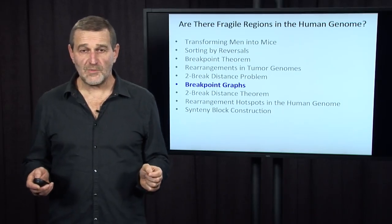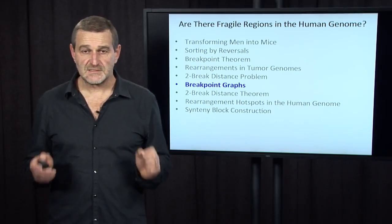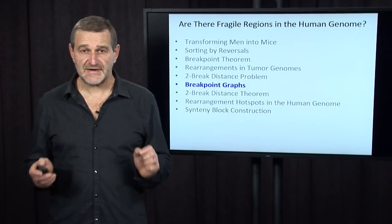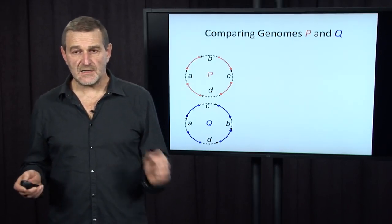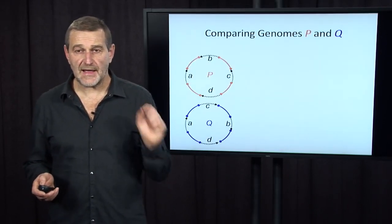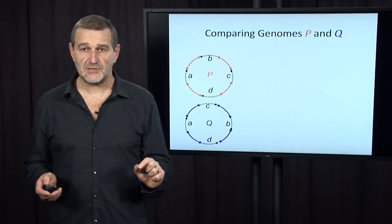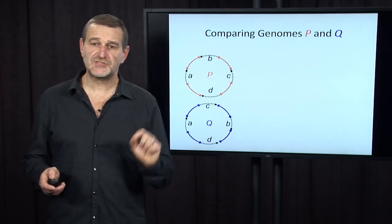We'll now talk about the breakpoint graphs, the workhorse of genome rearrangement studies. Let's take a look at two genomes: a red genome P and a blue genome Q.